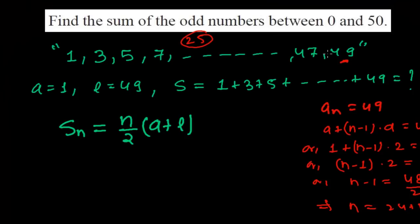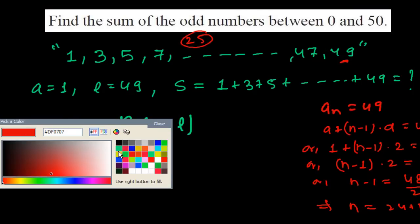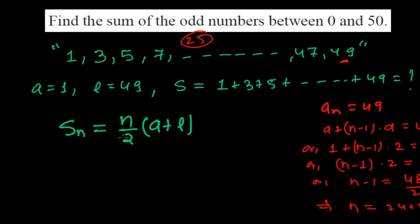In this sequence there are 25 number of terms. So simply I am just putting the values in this formula and I will be getting the sum of this series. The sum of the odd numbers between 0 to 50 is 25 divided by 2 times a is 1 and the last term is 49.